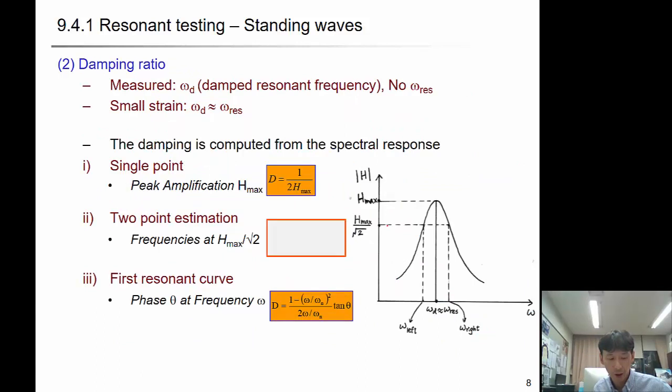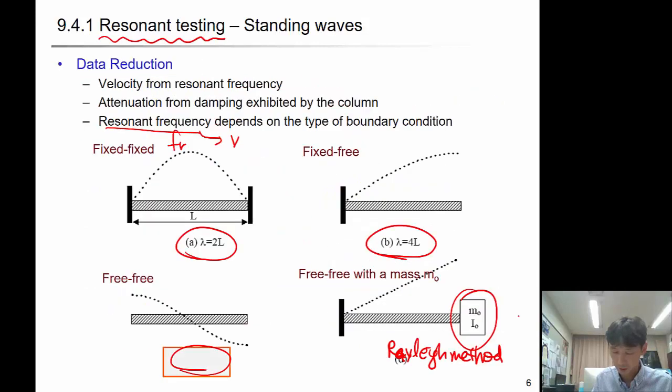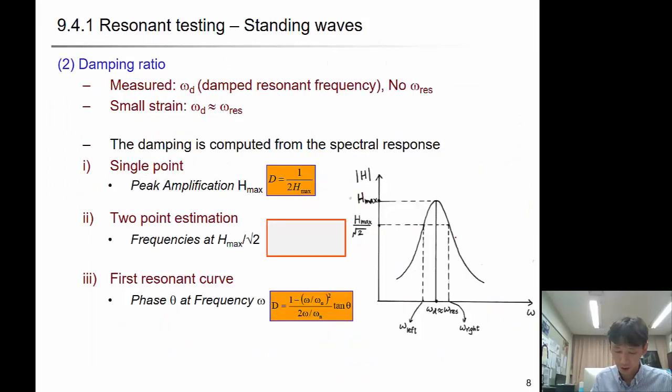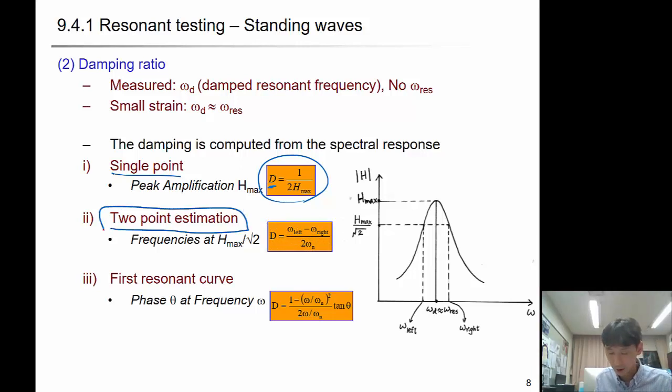How do we determine the damping ratio? Damping ratio is computed from spectral response. This kind of spectral response needs to be calculated first from measured response. Once you have that frequency response, there are several methods. First is the single point method from the peak amplitude of your frequency response.